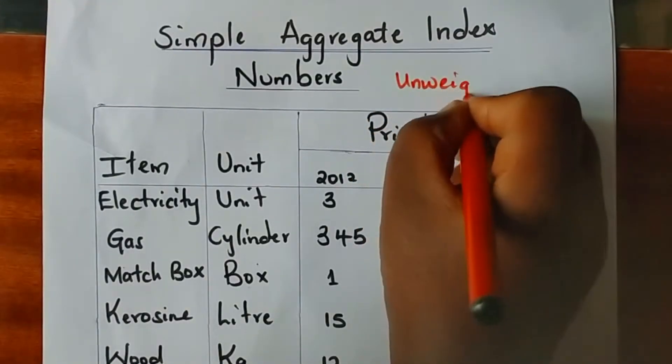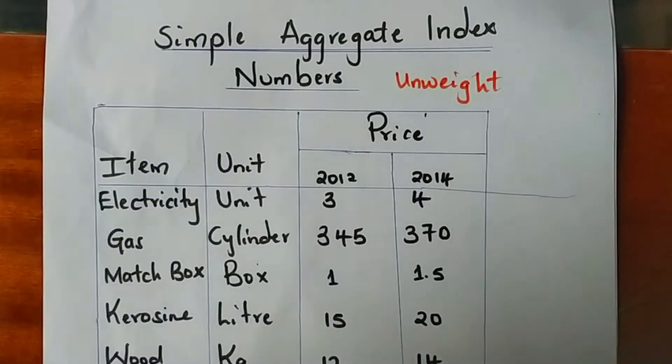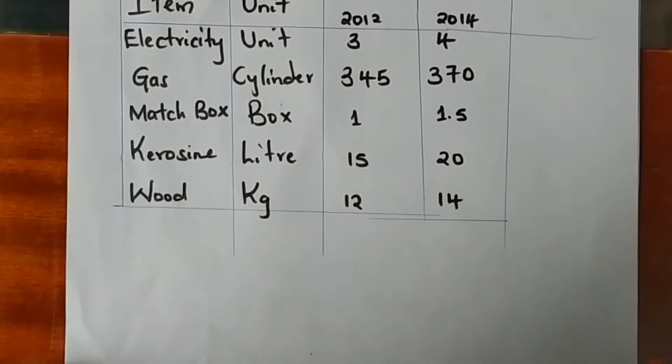Meaning that all the values of the items or commodities in the basket are assumed to be of equal importance. The simple aggregate index, as the name suggests, means that all the prices of the base year are aggregated.